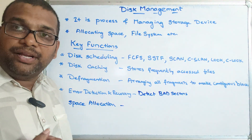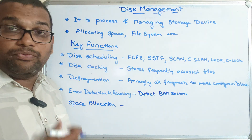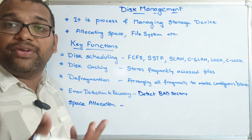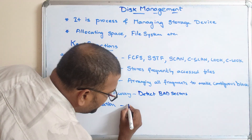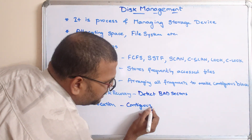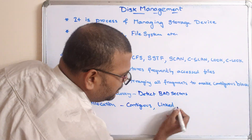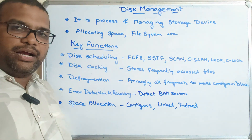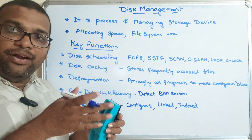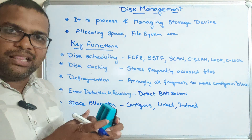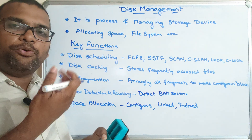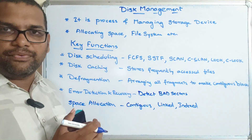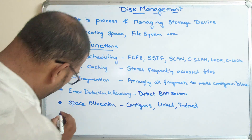The next function is space allocation. It allocates memory to files. We studied three different file allocation methods: contiguous allocation, where the file is stored in contiguous memory blocks; linked allocation, where the end of one memory block points to another block; and indexed allocation, where an index block contains pointers to all locations of that particular file.